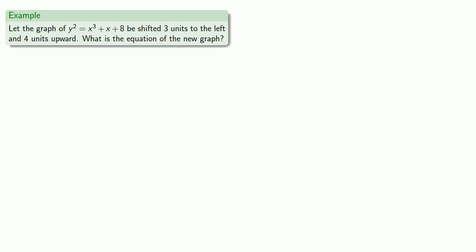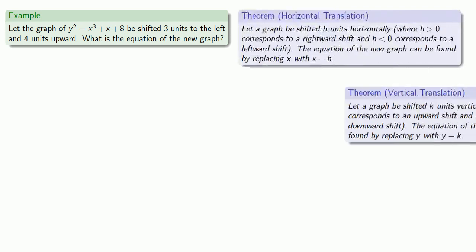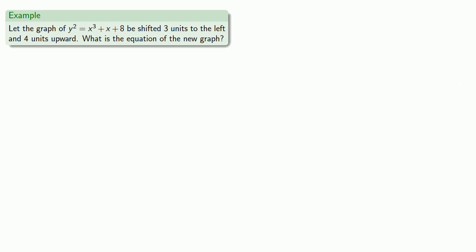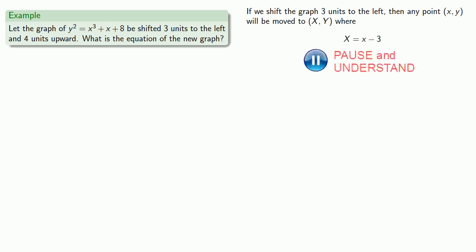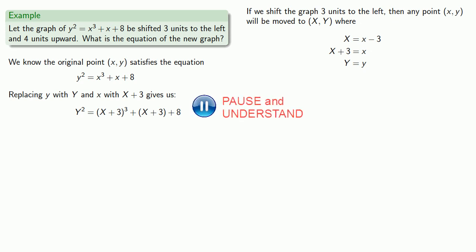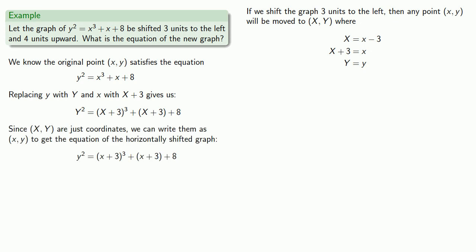Let's take a look at combining our two transformations. Rather than using the theorems, let's build this up from the basic concept of what a transformation means. If we shift our graph three units to the left, then any point x, y will be moved to capital X, capital Y, where capital X equals x minus 3 because we've gone to the left. Because this is a horizontal shift, our y-coordinate doesn't change. So I can solve these equations for lowercase x and y.